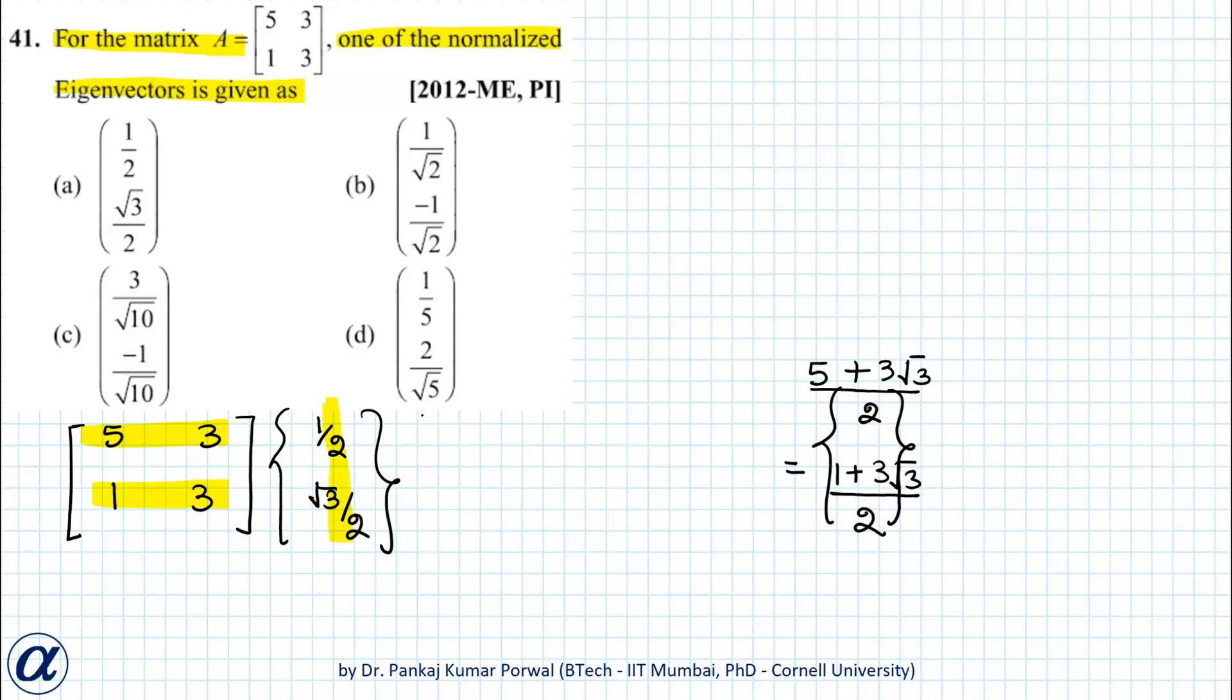So let's try the second vector. Choice B is 1 by root 2, minus 1 by root 2, and if I multiply this row with this vector.